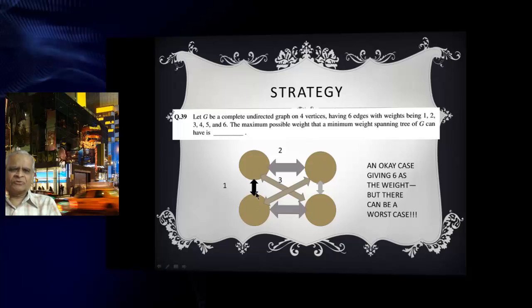Here is an okay case. Here are the 4 vertices. The complete graph of 4 nodes. Supposing 1 is here and 2 is here. By symmetry, 1 can be here or 2 can be here. If 3 can be here, then the weight can be 3 plus 2 plus 1 is 6. But there can be a worse case.